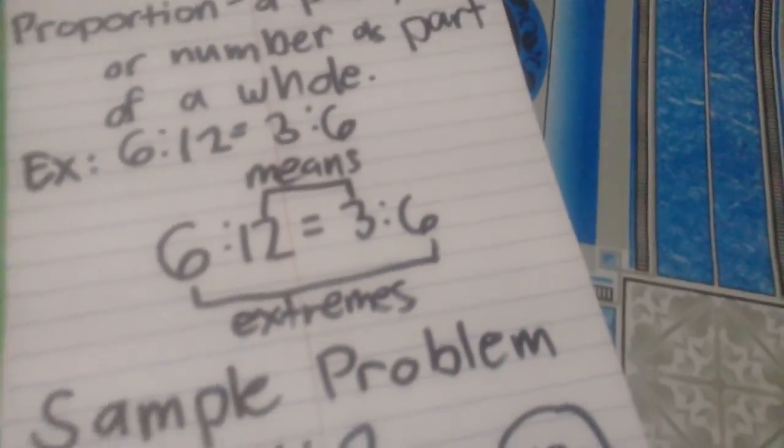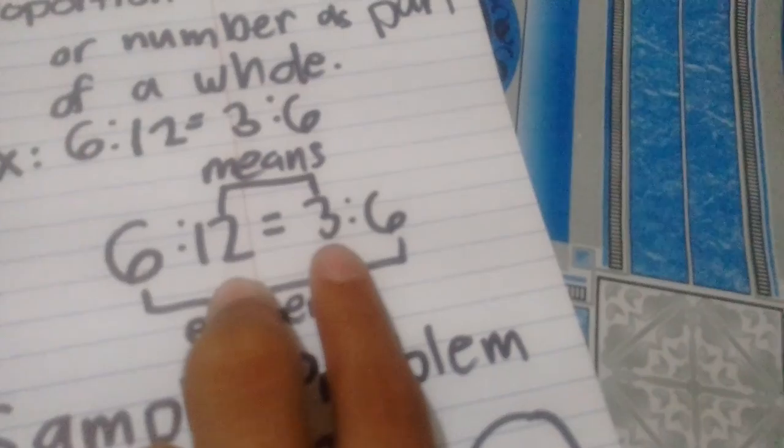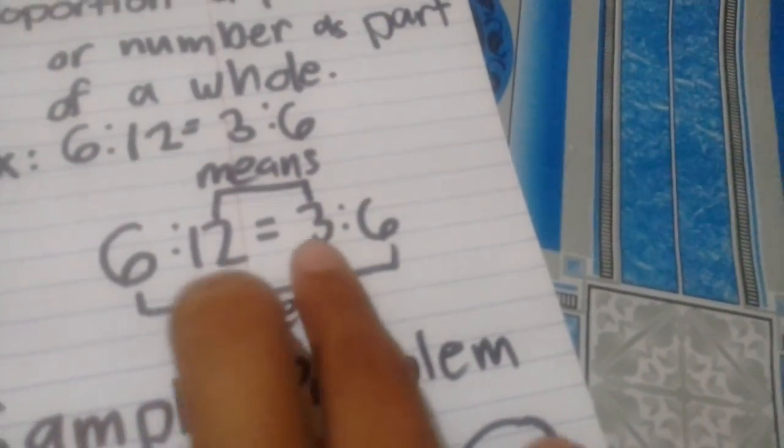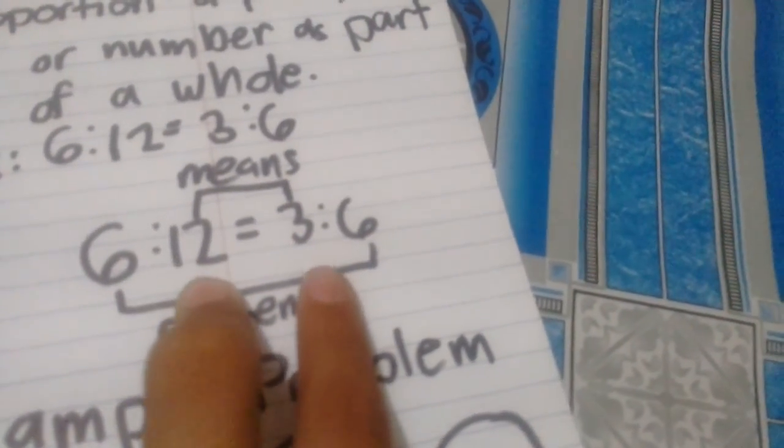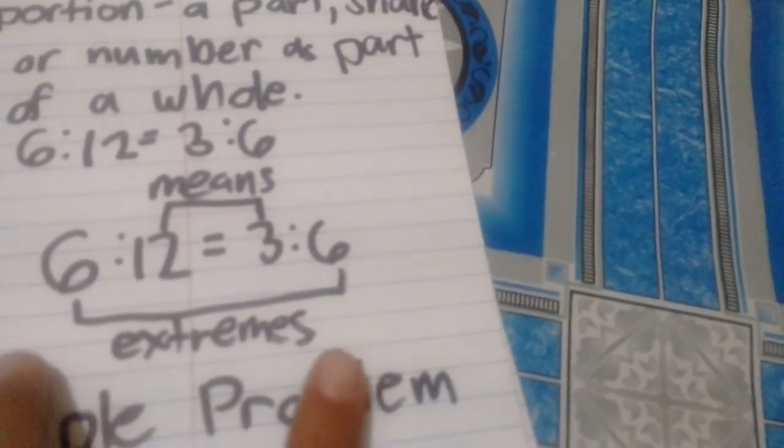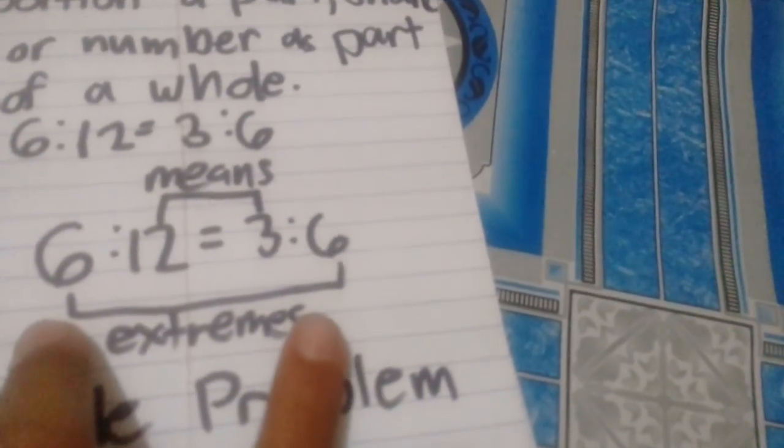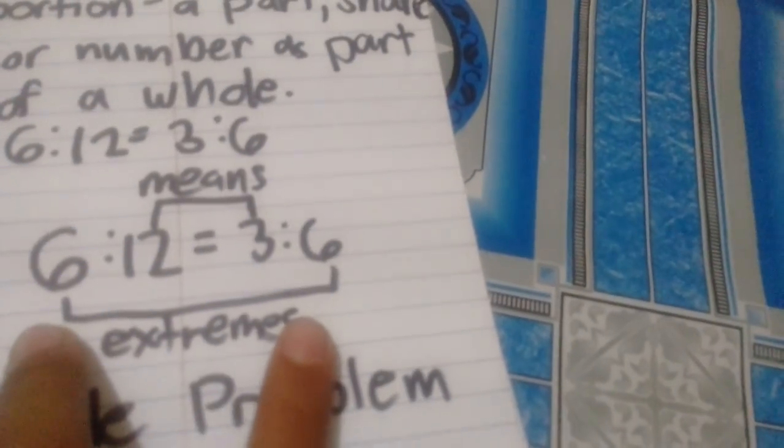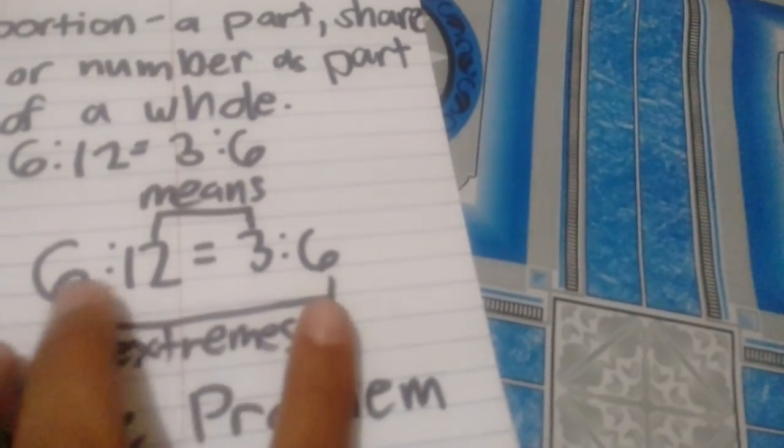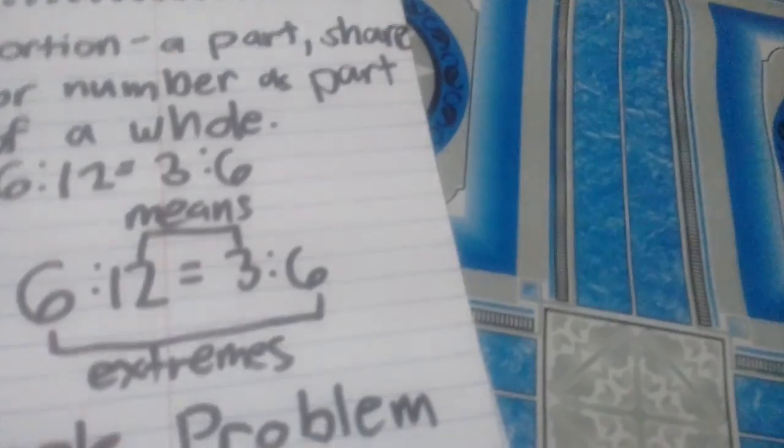The inner part of the proportion are called means. They are the ones that are near the equal sign. The outer parts are the extremes, which are far from the equal sign and near the means. Let's use a sample problem.